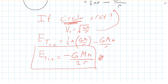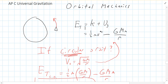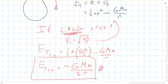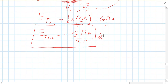But when you do have something in a circular orbit, that's an awfully handy equation to have. Note that this is negative, because where is zero potential energy? It's at infinity. So we're less than infinity, meaning we have less than zero total energy.